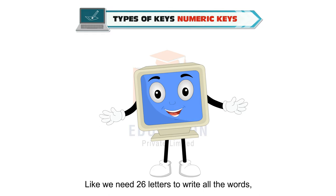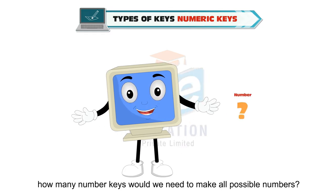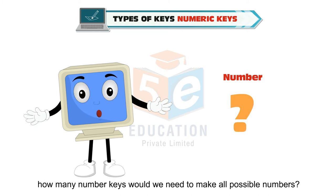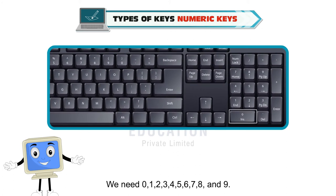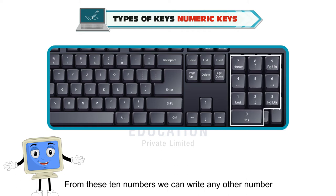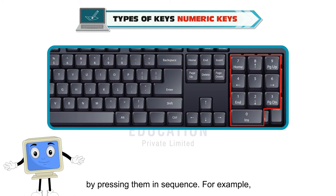Like we need 26 letters to write all the words, how many number keys would we need to make all possible numbers? We need 0, 1, 2, 3, 4, 5, 6, 7, 8 and 9. From these 10 numbers, we can write any other number by pressing them in sequence.